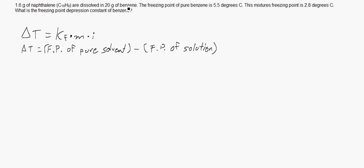Remember that a solvent is basically the stuff you're putting something into. So, in this case, we have the solute over here, C10H8, and the solvent being benzene. So, in this case, our Delta T is equivalent to 5.5 minus 2.8.